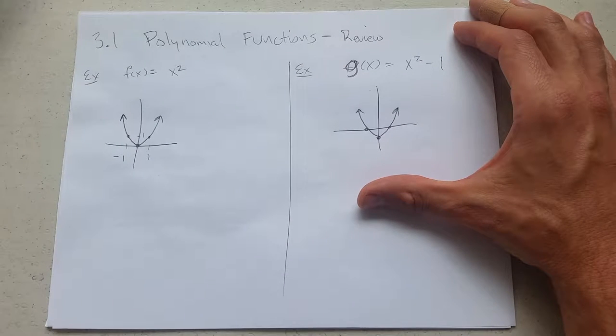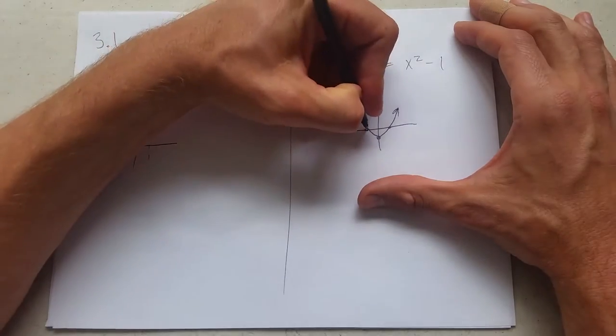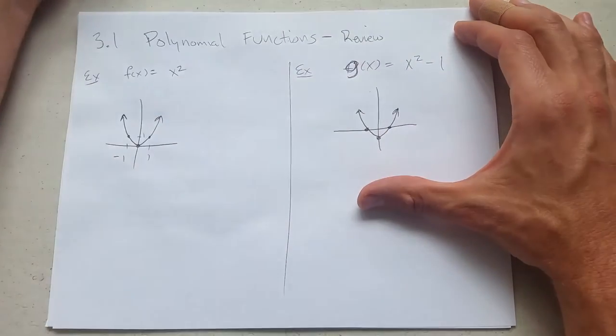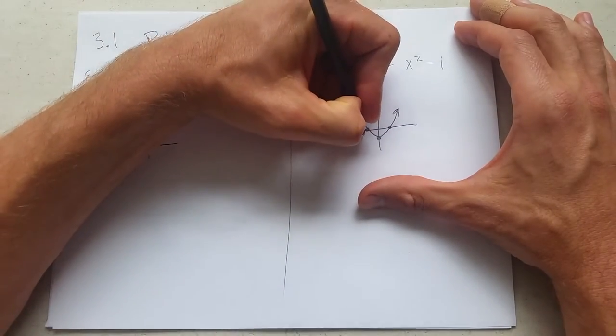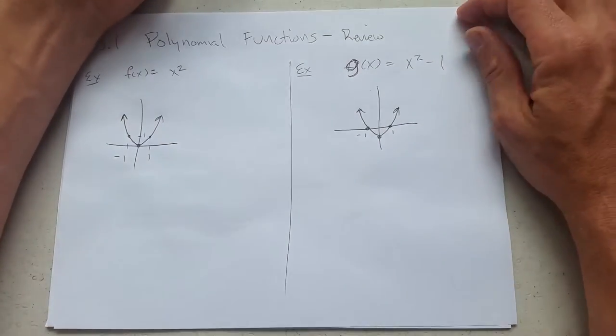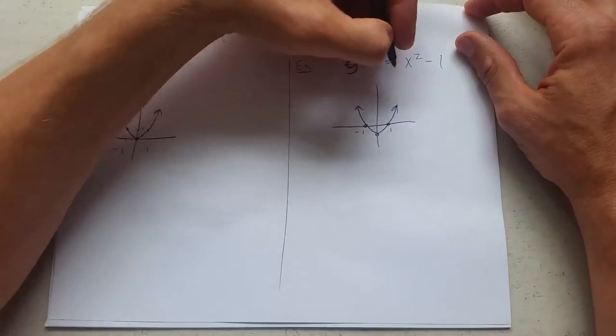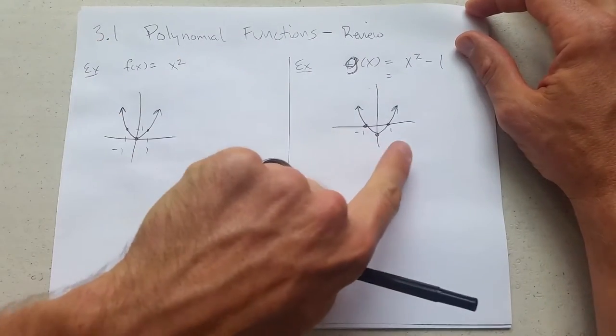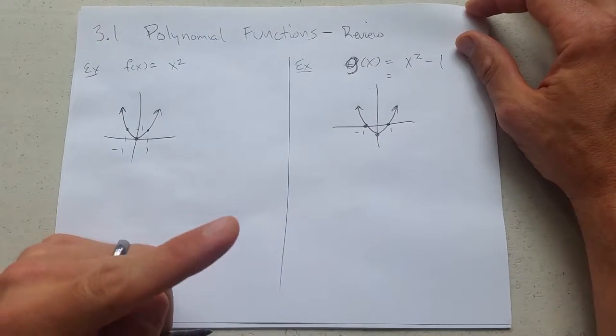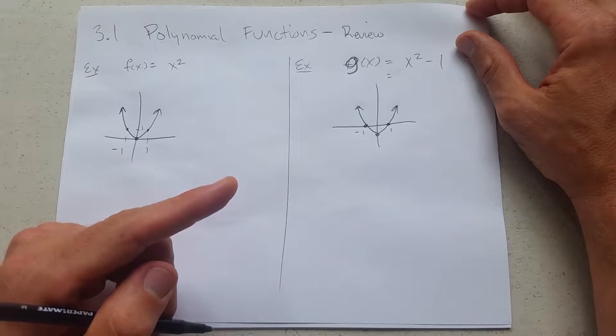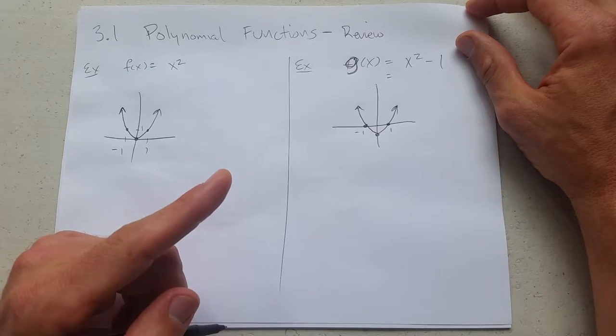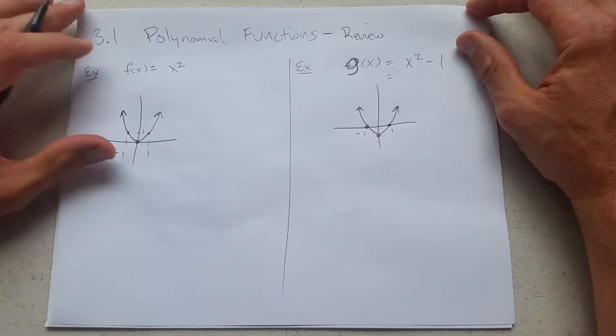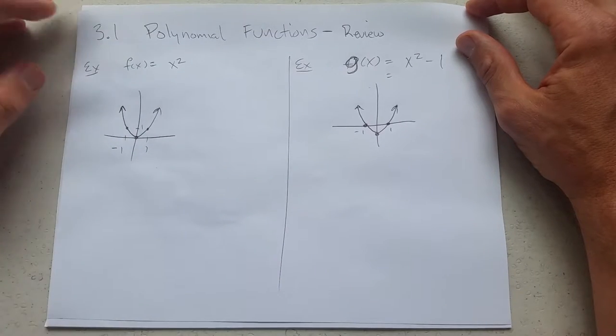What we're going to do now is look at this in a slightly different way. Instead of just thinking about transformations and graphs, we're going to focus a lot on x-intercepts. We have two x-intercepts now, negative 1 and 1. So these correspond to factors, and we will get into that in chapter three. It's one of the big ideas, and how to factor things of higher degree.